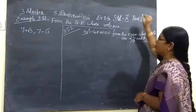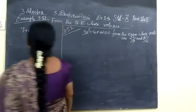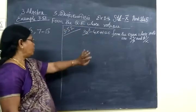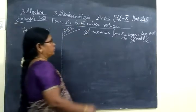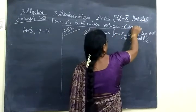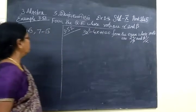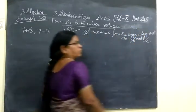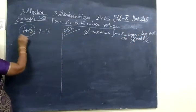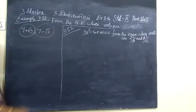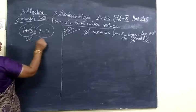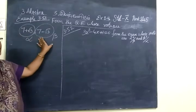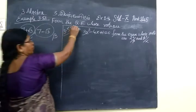Now we do problem 3.45. Example 3.51: Form the quadratic equation whose roots are alpha and beta. Here, one root is 7 plus root 3 and the other root is 7 minus root 3. You can consider this as alpha and this as beta. You are given two roots — one is alpha and another is beta — and you have to form the quadratic equation.